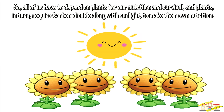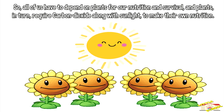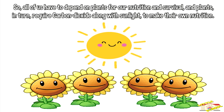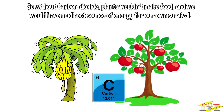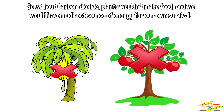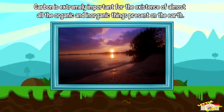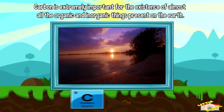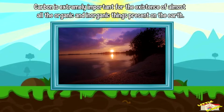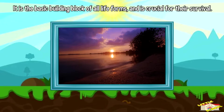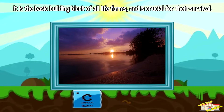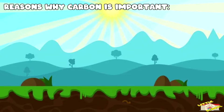No other organisms can convert the energy obtained from the Sun into the nutrients required for their survival. So all of us have to depend on plants for our nutrition and survival. Plants in turn require carbon dioxide along with sunlight to make their own nutrition. So without carbon dioxide, plants wouldn't make food and we would have no direct source of energy. Carbon is extremely important for the existence of almost all organic and inorganic things present on Earth.